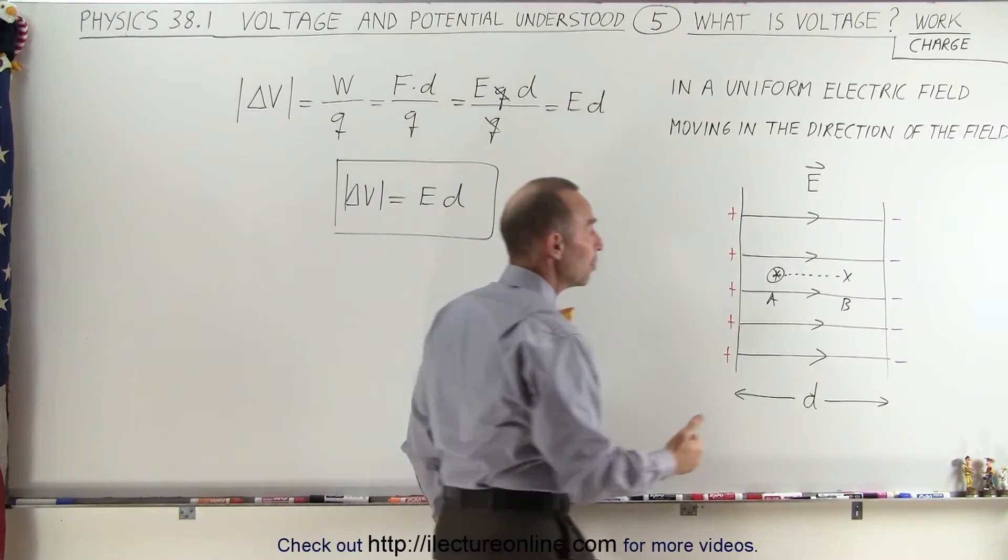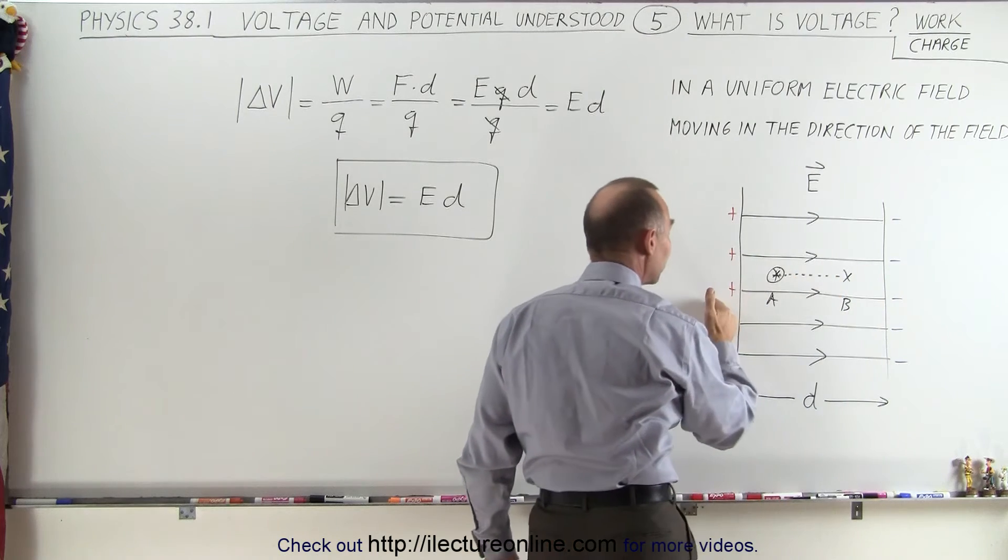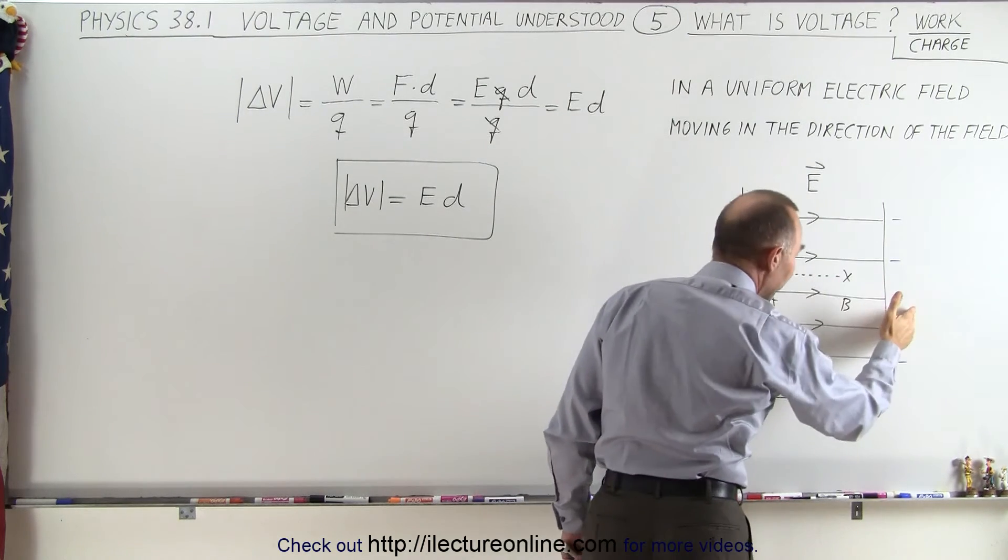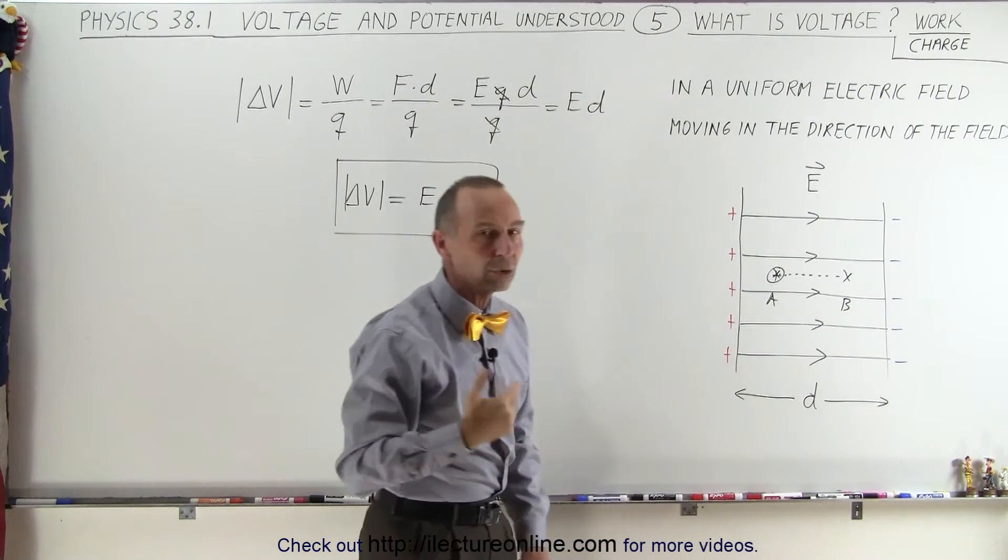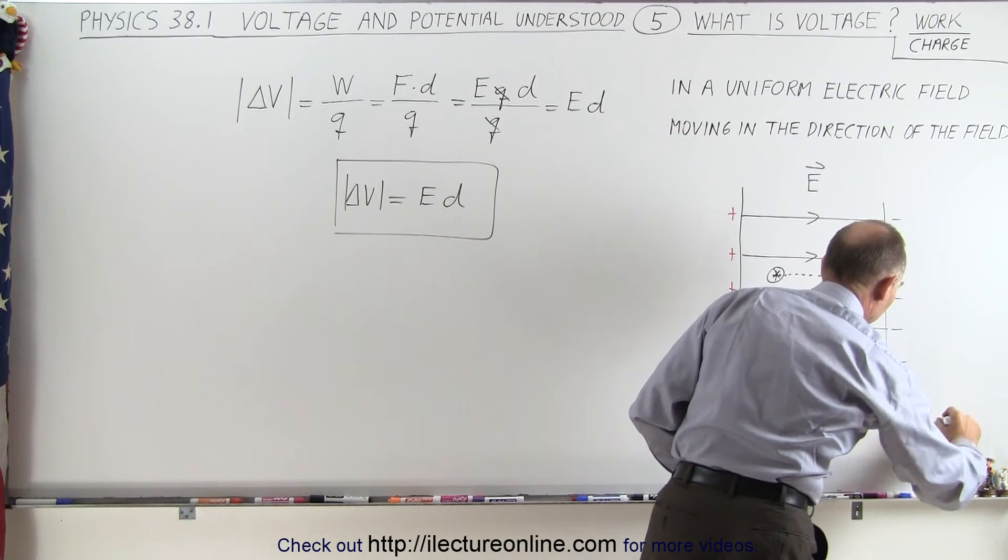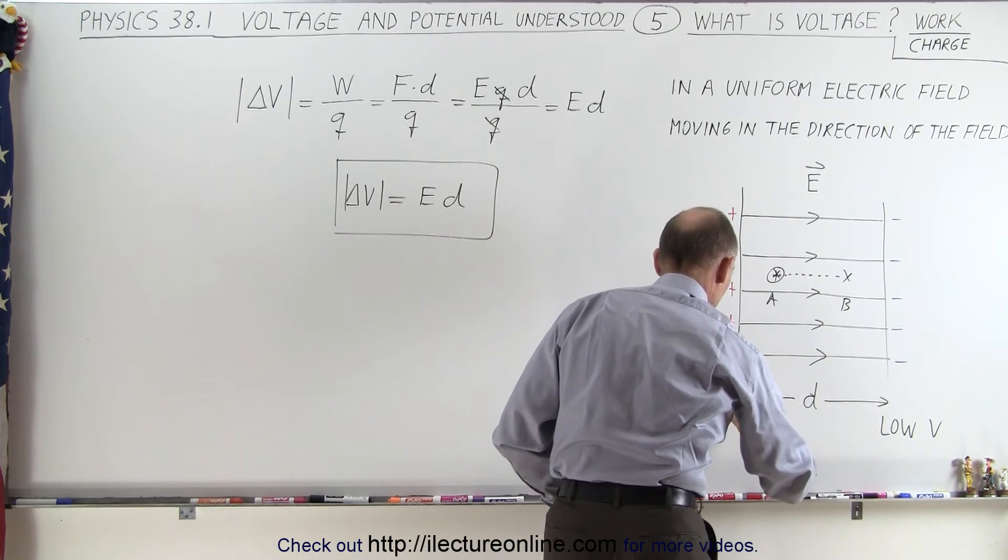Now, of course, if you move from the negative to the positive, then the potential will go up. If you move from the positive to the negative, then the potential will go down. So in other words, this is low potential, so low voltage, and this is high voltage.